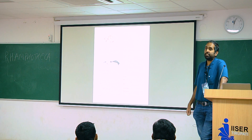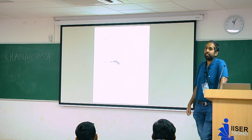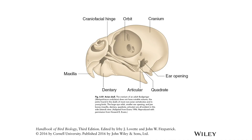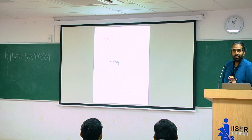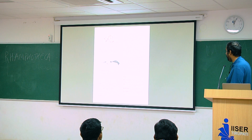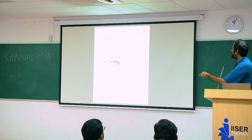The bird's bill has an upper jaw — a maxilla — and a lower jaw — a mandible. It has a ramphoteca that covers it, and a series of bones that connect to it.